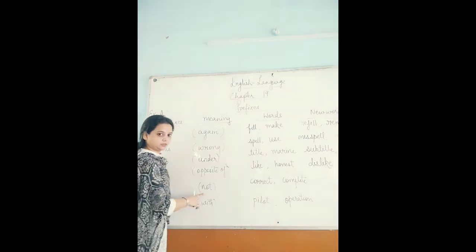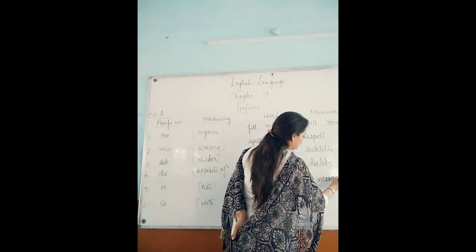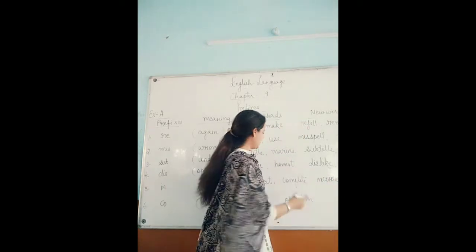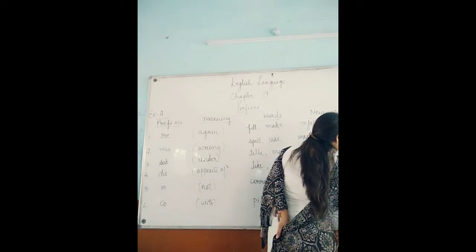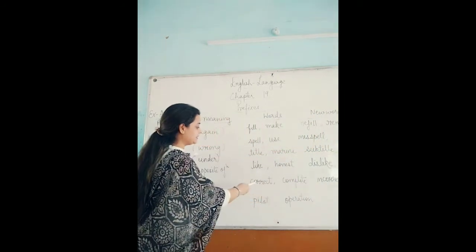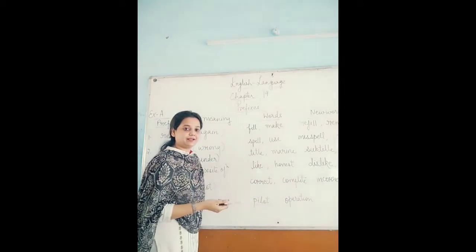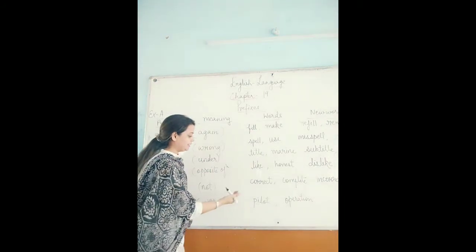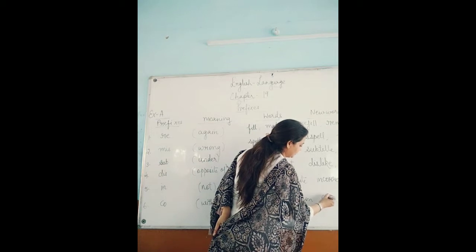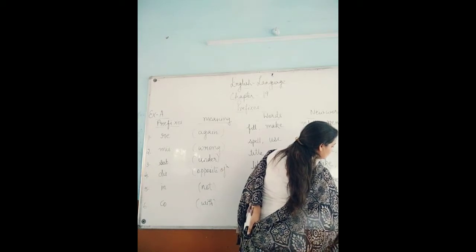Prefix in means not. If we add it to the base word correct, we get incorrect, which means not correct. And with complete we get incomplete. Here also, correct's opposite is incorrect, and complete's opposite is incomplete — both are also antonyms of each other. Last, we have co, which means with. If we add it with the word pilot, we will get co-pilot, or with operation we get co-operation.